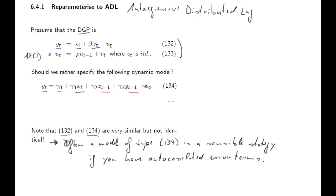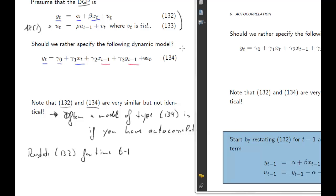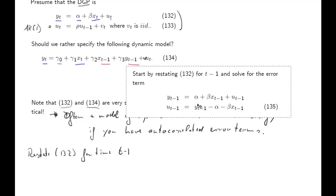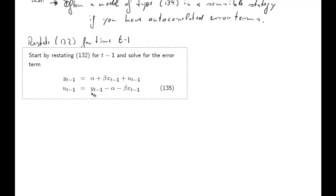We are going to do a little bit of algebra. We are going to start by restating the model in equation 132 for time t minus 1. If that model is true in time t, it will also be true in time t minus 1. We restate 132 for t minus 1 — that is this equation here. And then we solve this equation for U_{t-1}: we bring U_{t-1} to the left-hand side and everything else to the right-hand side, and we get this result.